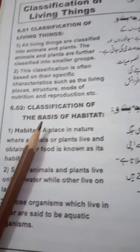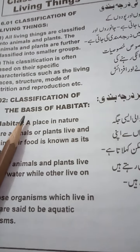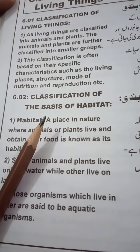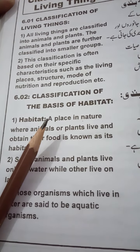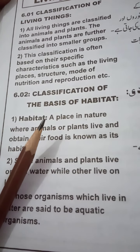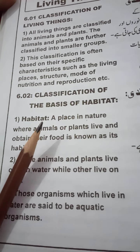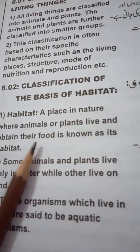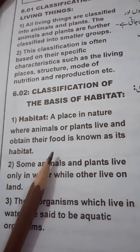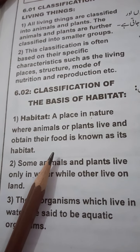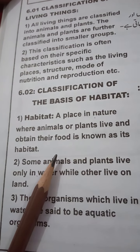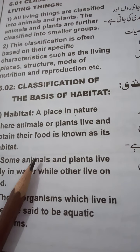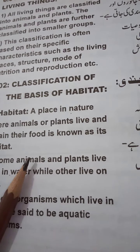Sab se pahle hum padhenge classification on the basis of habitat. Habitat — muskan — kya hai? A place in nature where animals or plants live and obtain their food is known as its habitat. Wo jagha ya maqam jahan janwar ya podhe rehte hai, pida hote hai, apne gaza lehete hai — woh unka muskan kehlata hai.